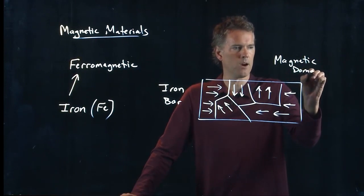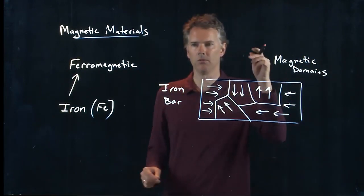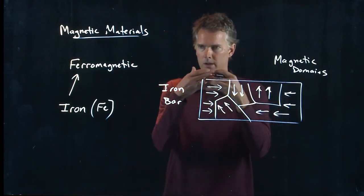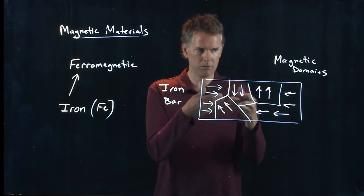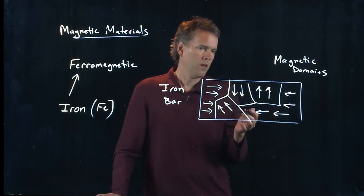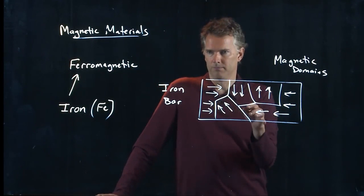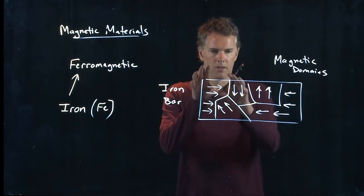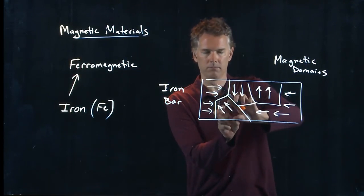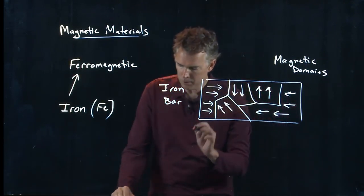And these are which way those magnetic dipoles are pointing. Magnetic dipoles are inherent in atoms and molecules, particularly iron. So all these things are scrambled. This domain is all pointing in one direction, but the next one is random. But if I put the whole thing in a B field...